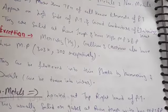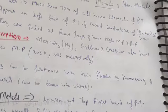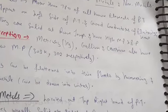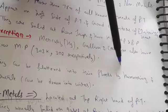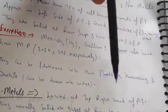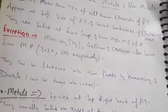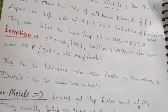They can be flattened into thin sheets by hammering. Solid metals can be converted into thin sheets - we can flatten them into wires and sheets through machines and hammering.